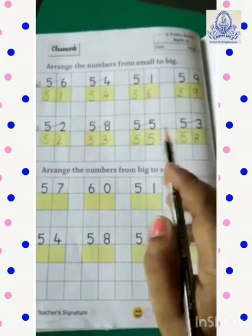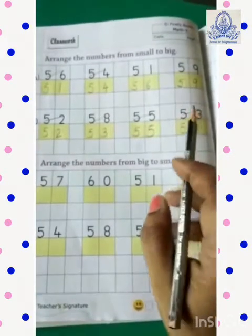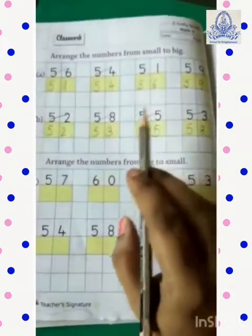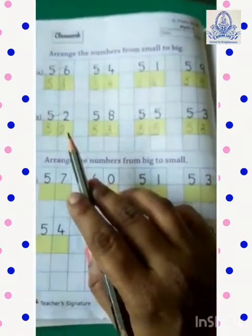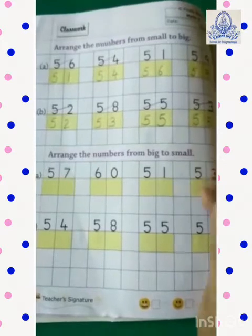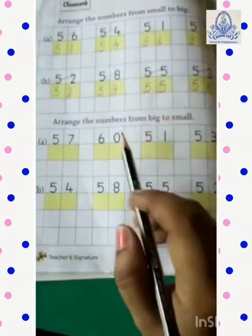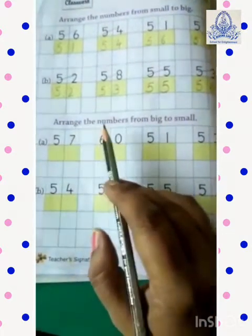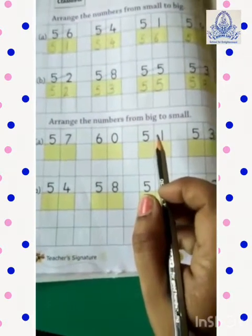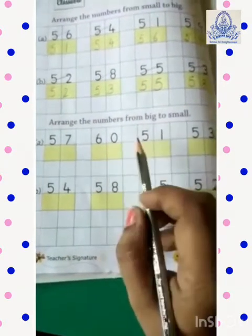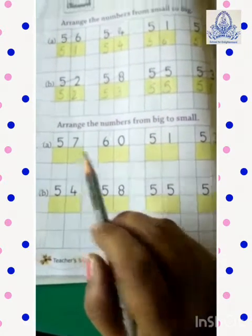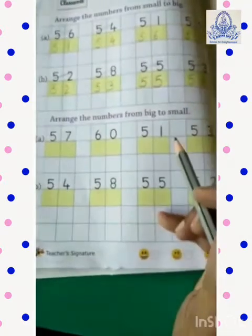समझ में आया? Small to big कैसे करना होता है? जो given numbers में से जो सबसे छोटे होते हैं पहले वो, फिर उससे बड़ा, फिर उससे बड़ा, फिर उससे बड़ा. Okay? Now, come to the next question. Arrange the numbers from big to small. अब यहाँ पे हम लोगों को numbers big to small करना है — बड़े numbers को पहले लिखना है, फिर उससे छोटे, फिर उससे छोटे. Okay?